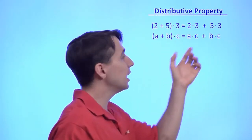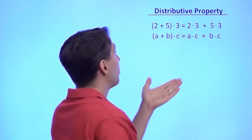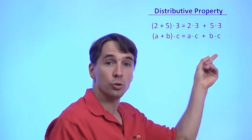Instead of two, three, and five, I just write this down with a, b, and c. The distributive property tells us that this is always true for any numbers a, b, and c.